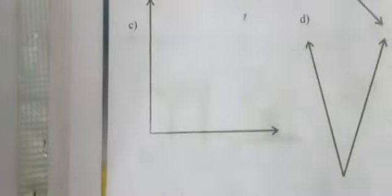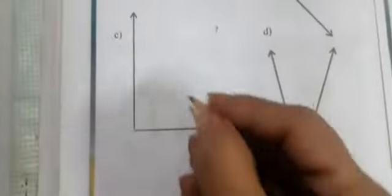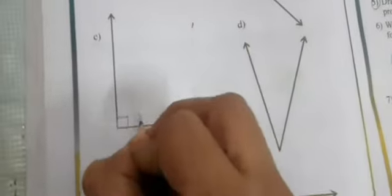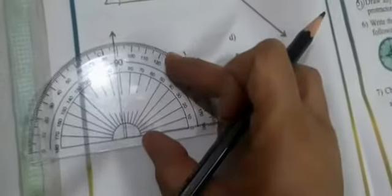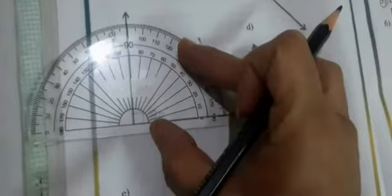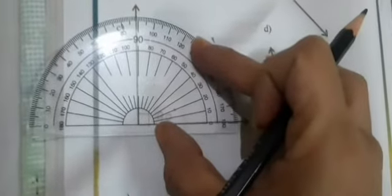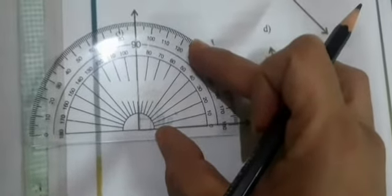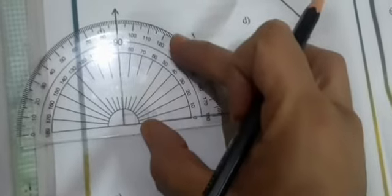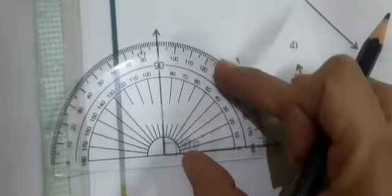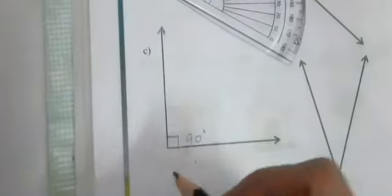For the third problem, if the angle is of L shape you need not measure it — you can directly write it as 90 degrees. If it is of L shape then you need not measure it; you can directly write it as 90 degrees. See, the sharp 90-degree point gets met.